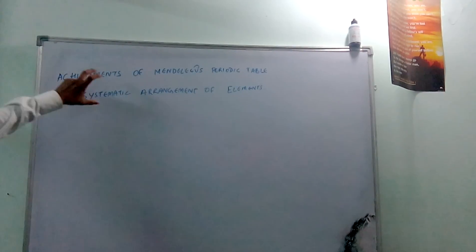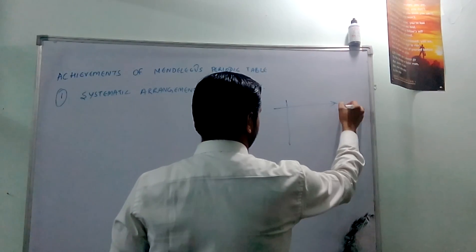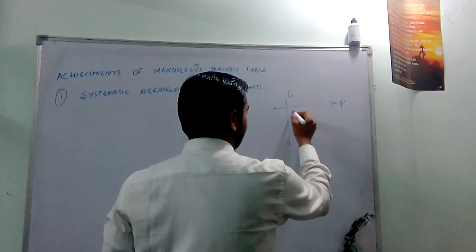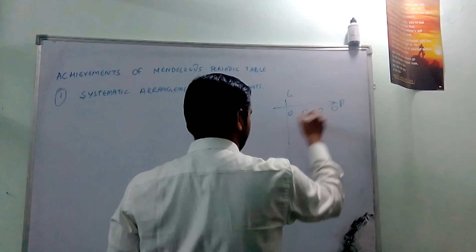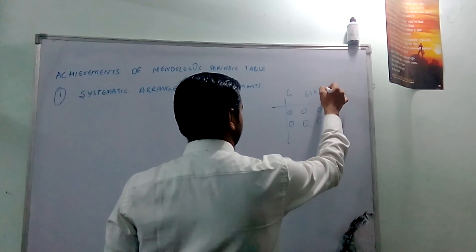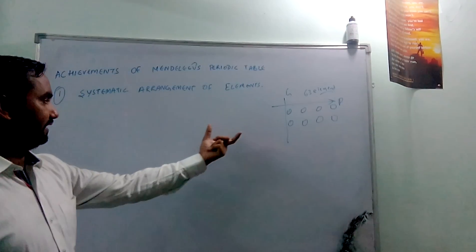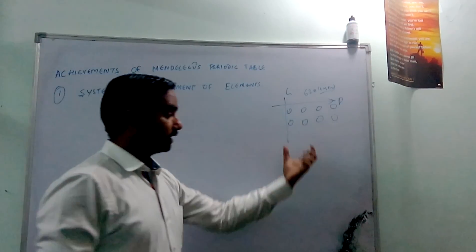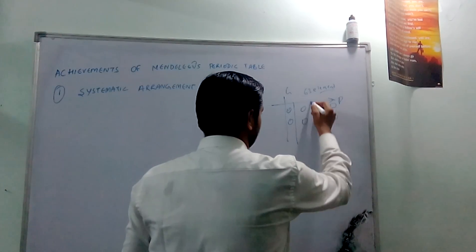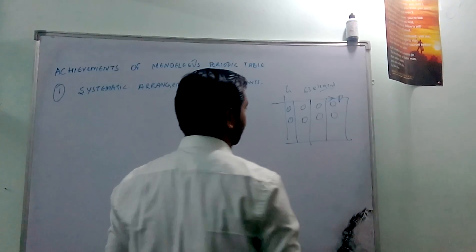What he does, he made groups and periods to define all the elements' positions, and at that moment 63 elements were there. So it was very tough, and he made it very easier to recall the elements in a similar group with their increasing atomic mass and their properties.